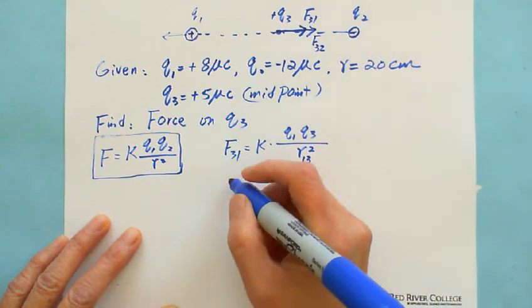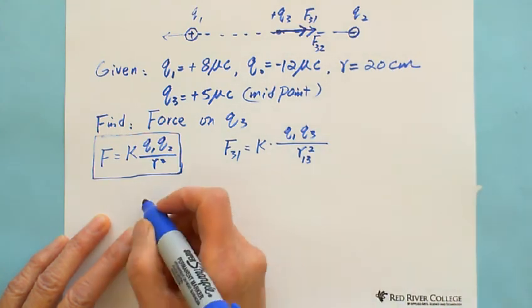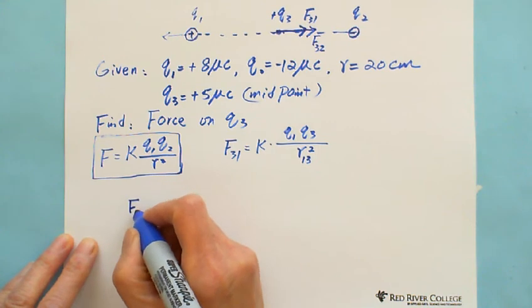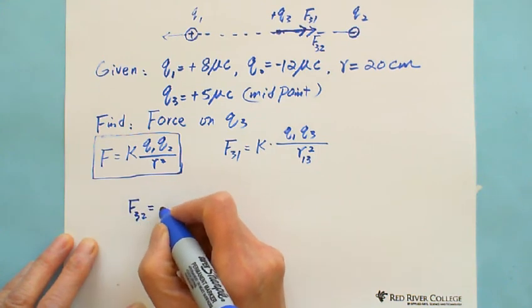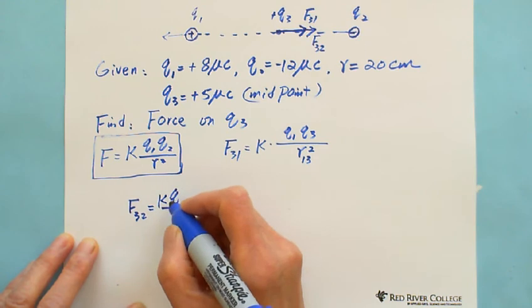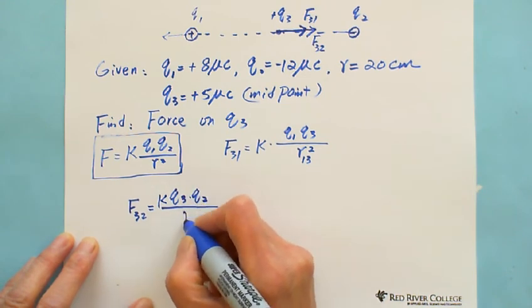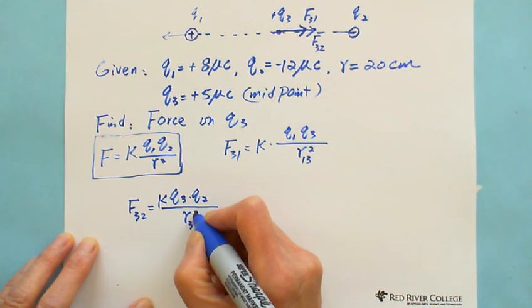That's why we write F32 equals K Q3 Q2 over R32 squared.